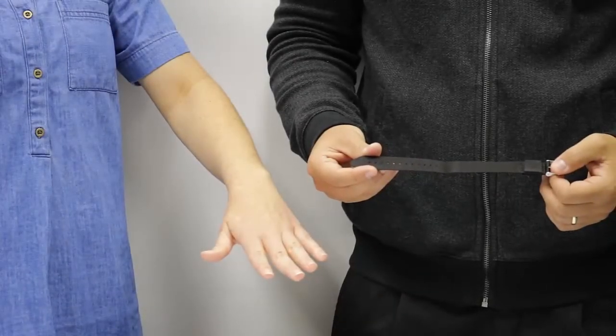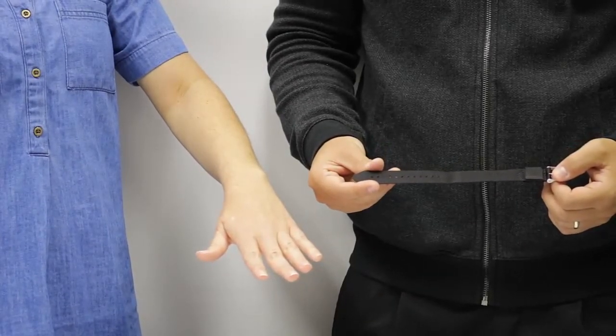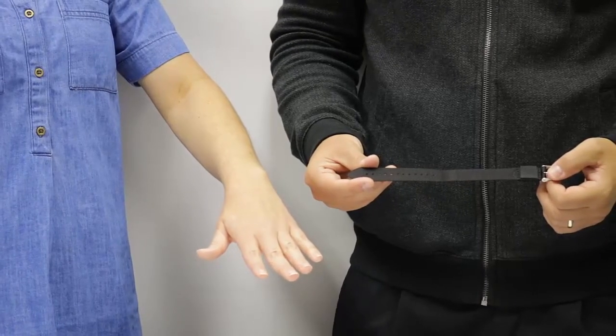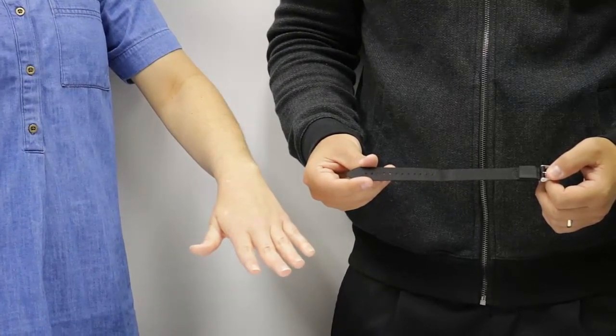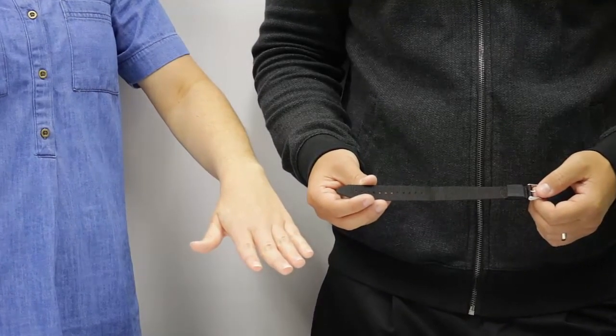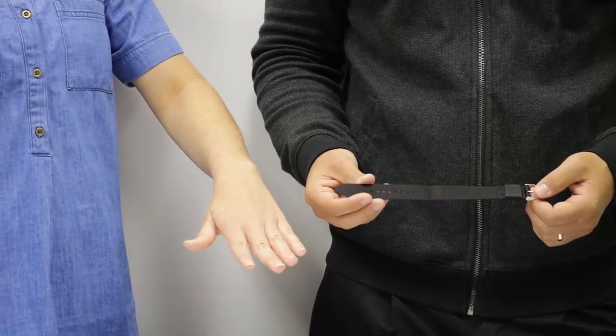The adjustable woven nylon wristband comes in sizes short or long. The short wristband fits a wrist four and a half to seven and a half inches around. The long wristband fits a wrist between six and nine inches around.